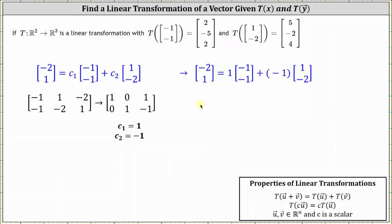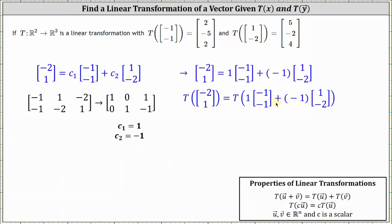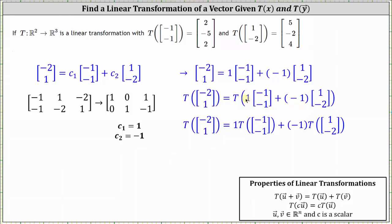Next, we'll take the transformation of both sides of the equation. Remember, our goal is to find the transformation of the vector (-2, 1). On the right, we now have a transformation of the sum of these two products. Because we have a linear transformation, we can rewrite the right side using the properties of linear transformations: first writing the transformation of a sum as a sum of two transformations, then factoring out the constants, which are 1 and -1. So the right side becomes 1 times T(-1, -1) plus (-1) times T(1, -2).